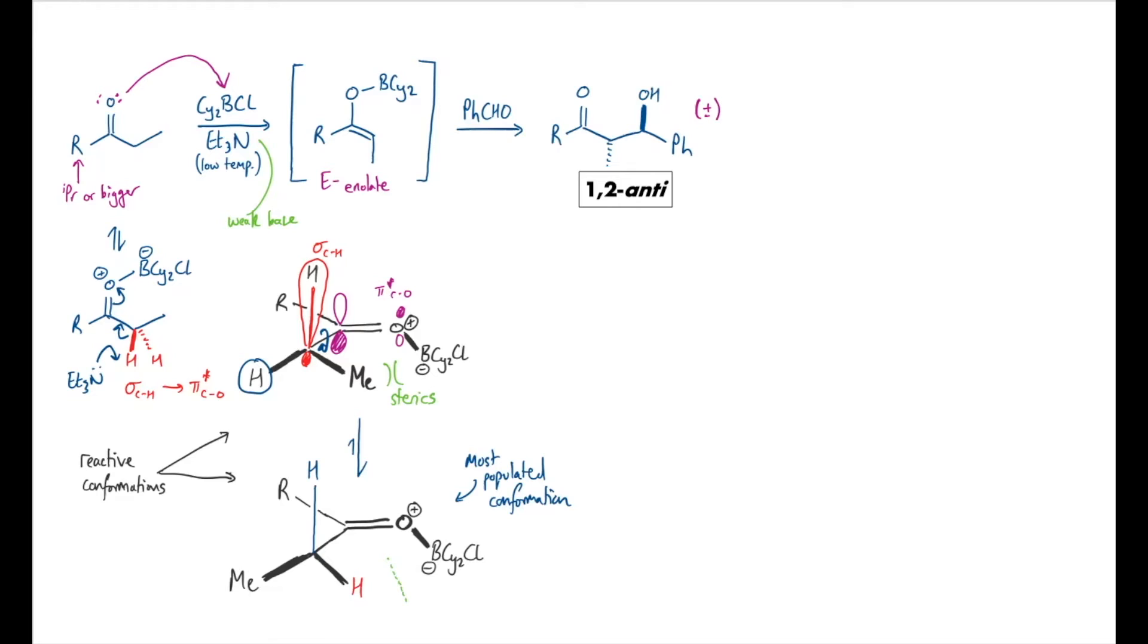So we can see now if the triethylamine were to sneak in and deprotonate, the methyl group is quite a long way away from the oxygen. And so under kinetic control at low temperature, we will selectively form this particular geometry of enolate. So this is E. And the other product is a triethyl ammonium cation.